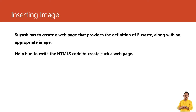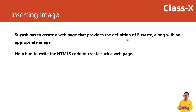For the inserting image example, this is the example you have to solve. You have to create a suitable document. SUIAS has to create a web page that provides the definition of e-waste along with an appropriate image. So how can you write the HTML code to create such a web page? How you can create a web page that provides the definition of e-waste and in it we insert the appropriate image. For that, we have to write the HTML code to create.